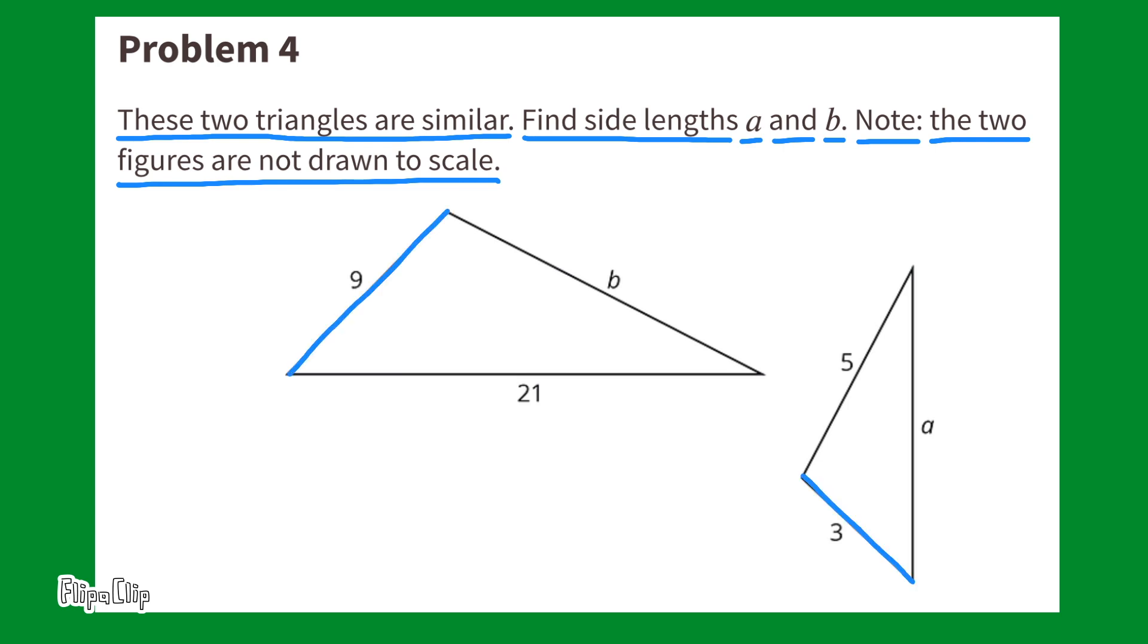Since these figures are not drawn to scale, we'll have to use the information that they provided us to help us figure out what the scale factor is. So let's look at these corresponding side lengths, three and nine. Well, I know that three times three equals nine, so the scale factor must be three.